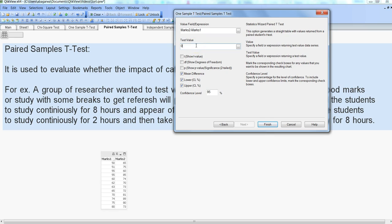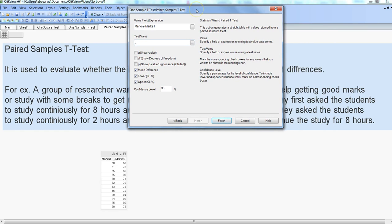The test value is zero because we are just specifying whether they are significantly different from each other or not. If there is any value like you want to test, let's say 70% in my previous example, then you need to specify the test value. But now I am just testing whether they are significantly different from each other or not, so I've specified zero.